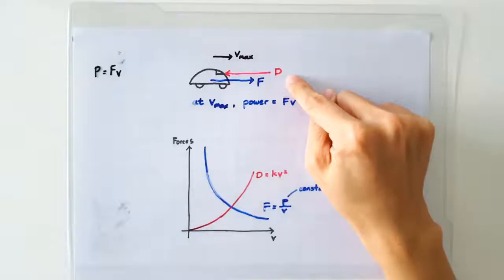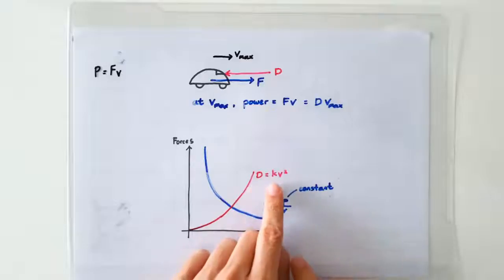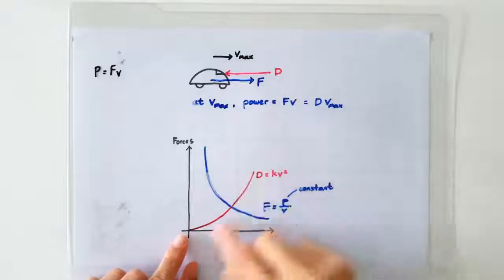The drag force, on the other hand, increases with speed. So if we assume that the drag force is directly proportional to the square of the speed, then the graph is going to be a quadratic one.